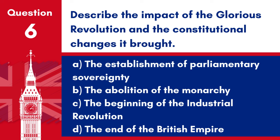Question 6: Describe the impact of the Glorious Revolution and the constitutional changes it brought. a. The establishment of parliamentary sovereignty. b. The abolition of the monarchy. c. The beginning of the Industrial Revolution. d. The end of the British Empire. Answer: a. The establishment of parliamentary sovereignty. The Glorious Revolution of 1688 led to the overthrow of King James II in favour of William and Mary, which significantly limited the powers of the monarchy and laid the foundation for a constitutional monarchy with parliamentary sovereignty.